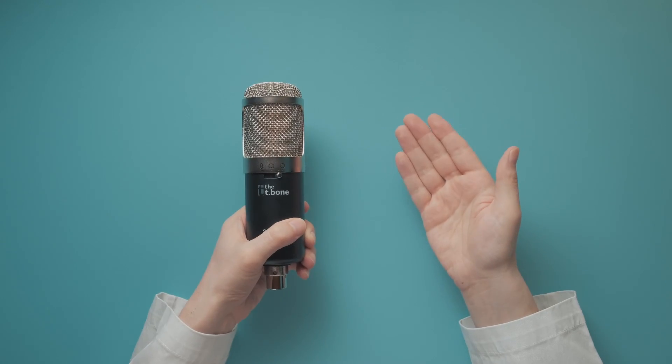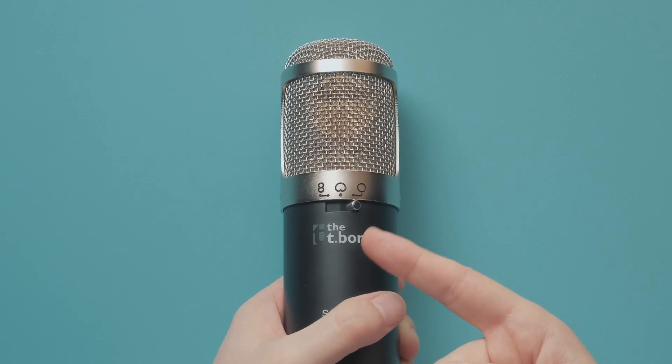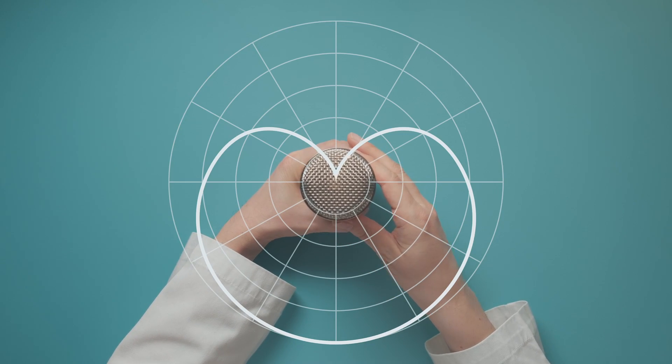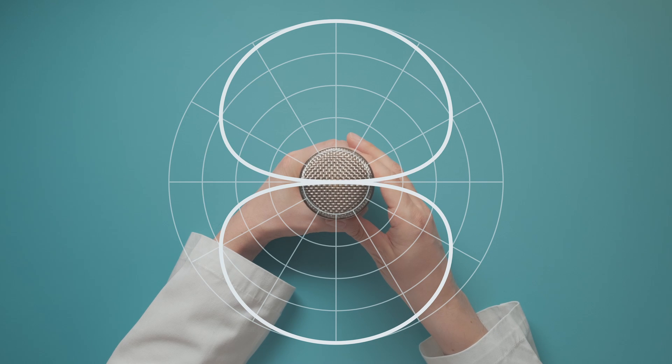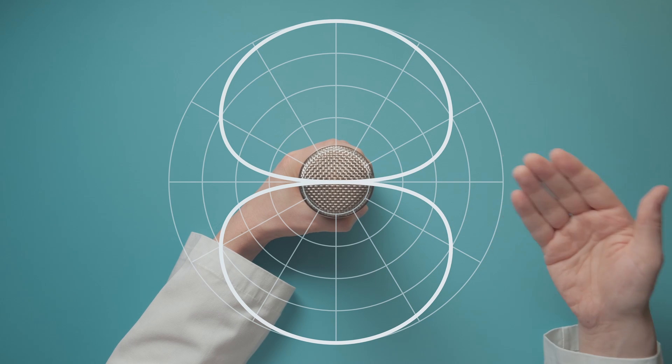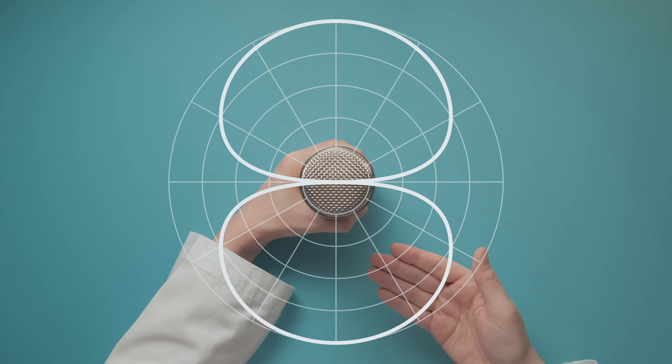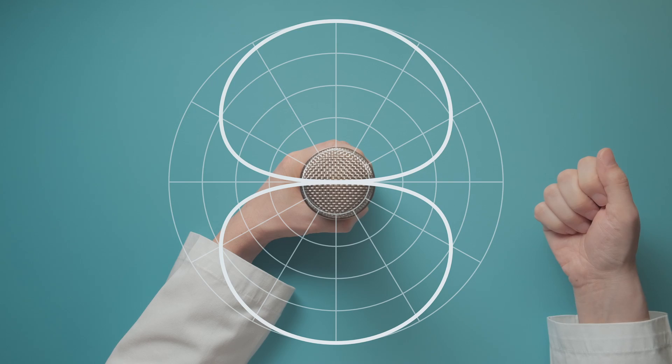Some microphones even allow you to switch their polar pattern. In this case Omni, Cardioid or Figure 8. The Figure 8 polar pattern is ideal when you have two podcasters or background vocalists facing each other, and it's also used in stereo recording techniques.